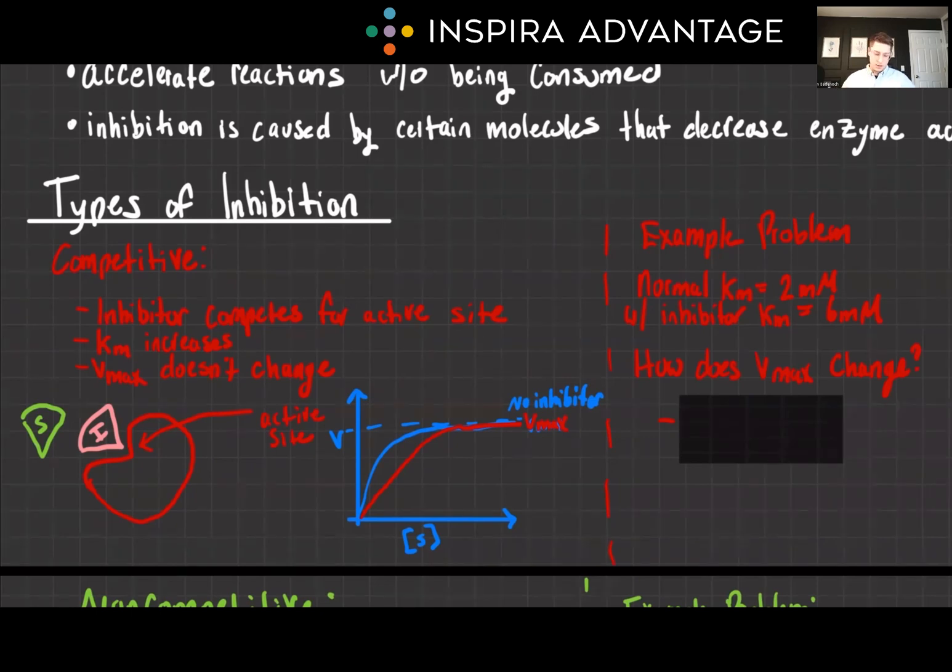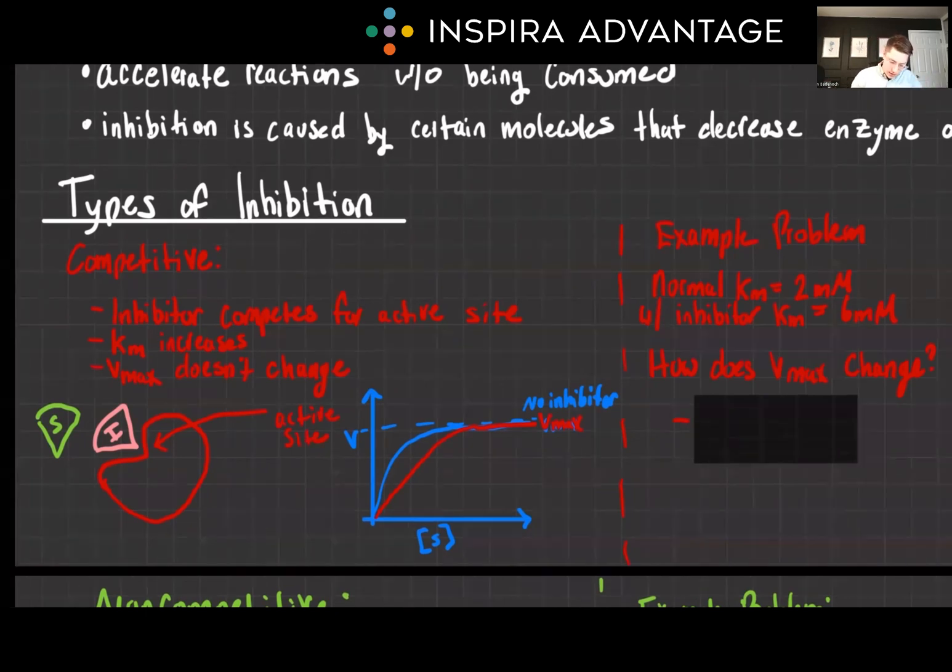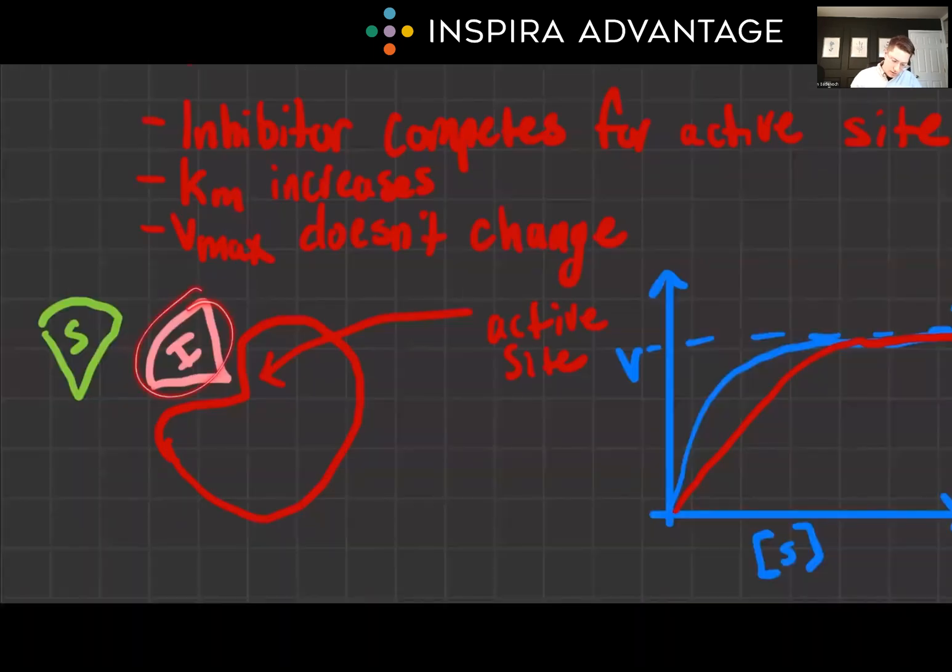The reason for this is just statistics. As we zoom in on our picture here, we've got our inhibitor triangle blocking the substrate triangle. Well, if we just dump a whole lot more substrate in there, we can still have our VMAX being reached, because statistically, an inhibitor is never going to bind.